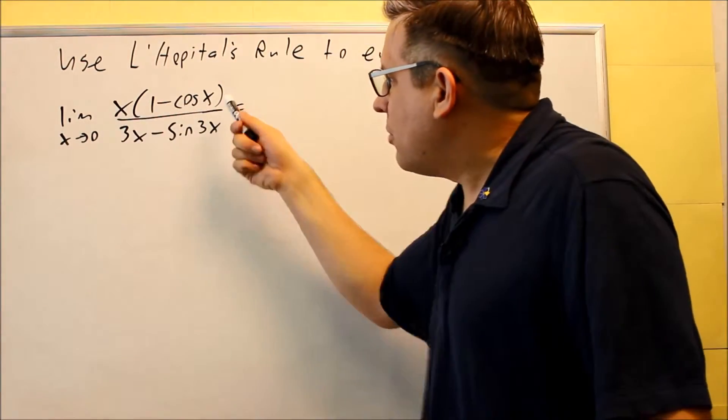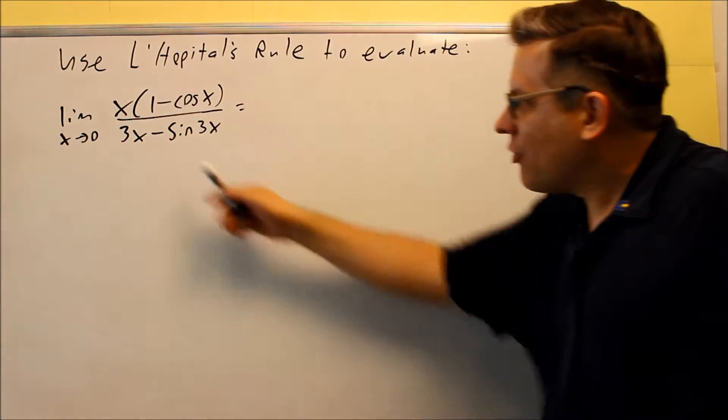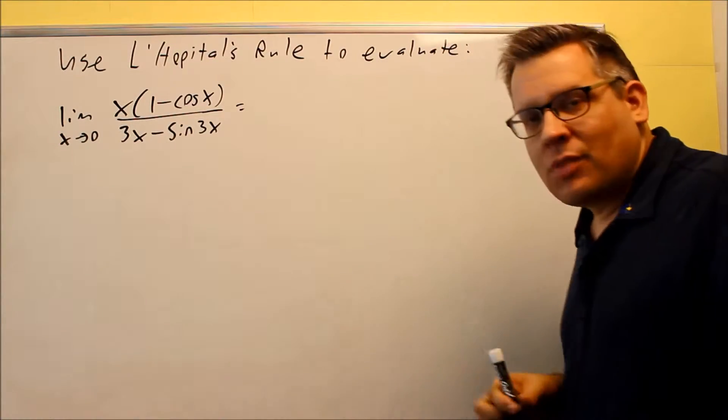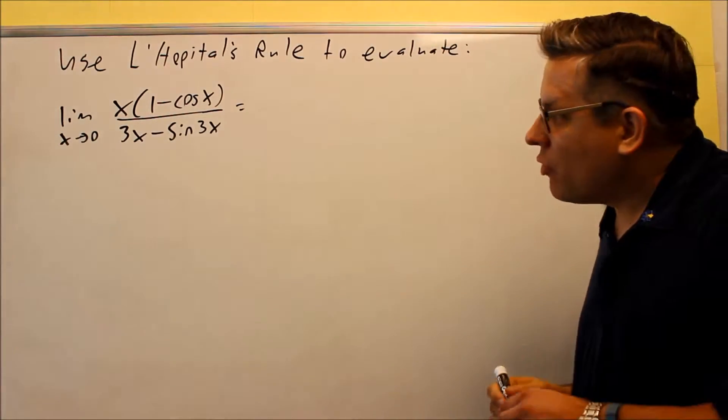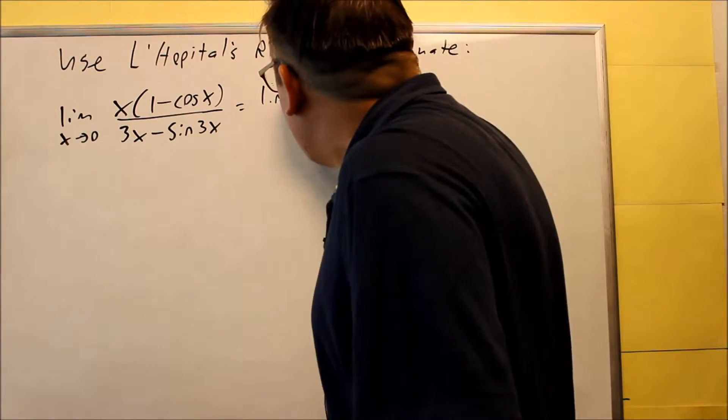Okay, so if I put zero in the top, zero times anything is zero. If I put zero in these down below, I'll get a zero as well, which means definitely we have to start by using L'Hôpital's.